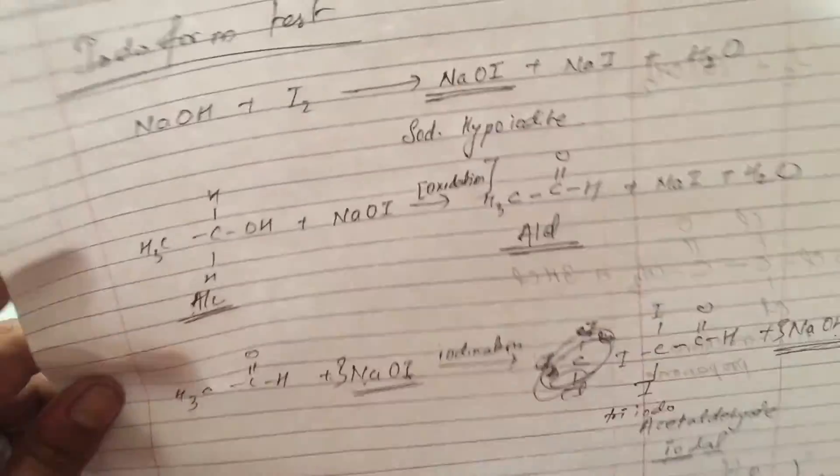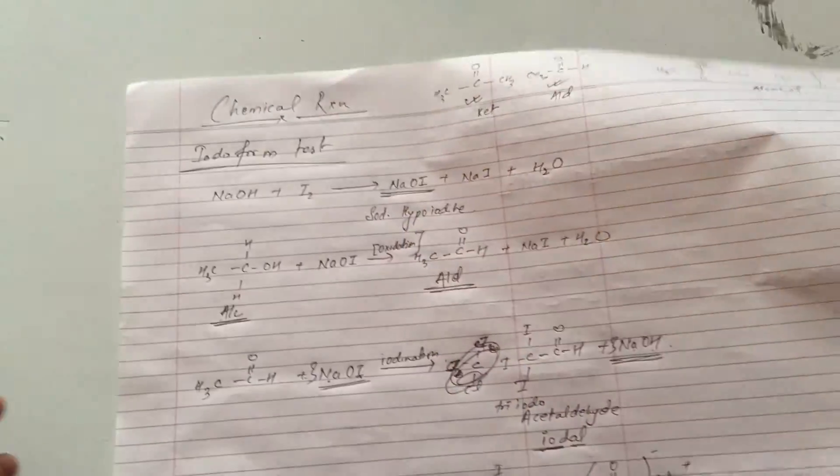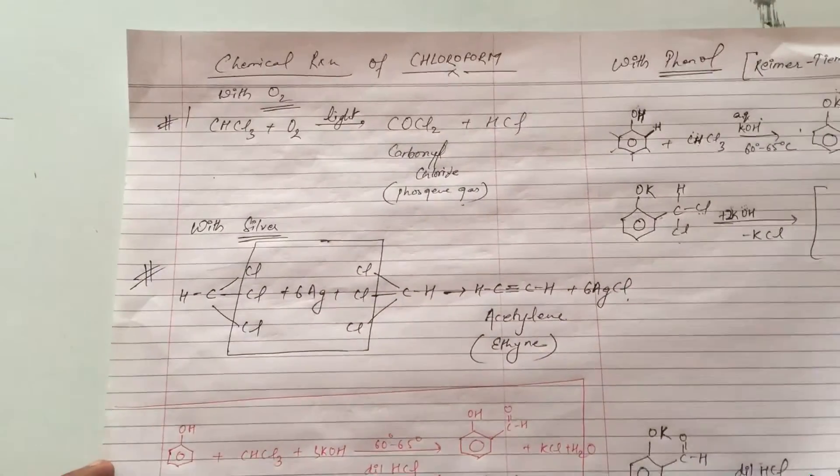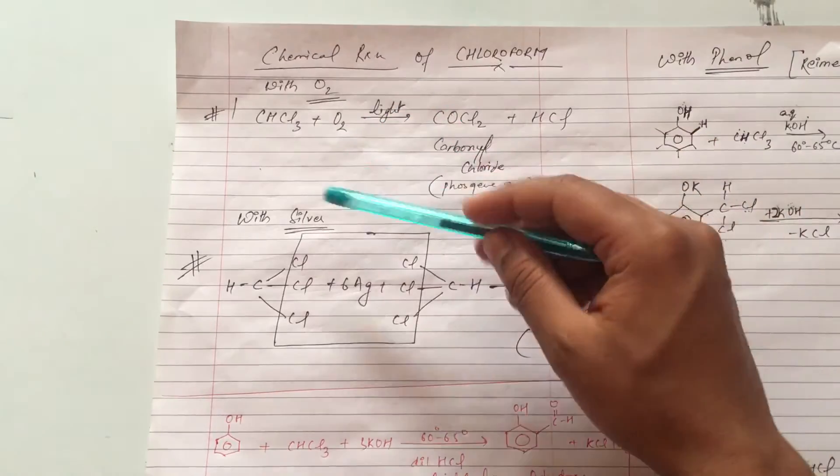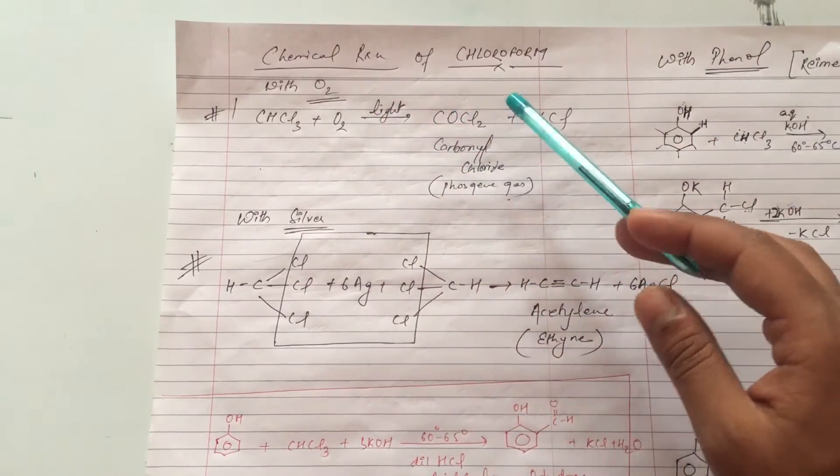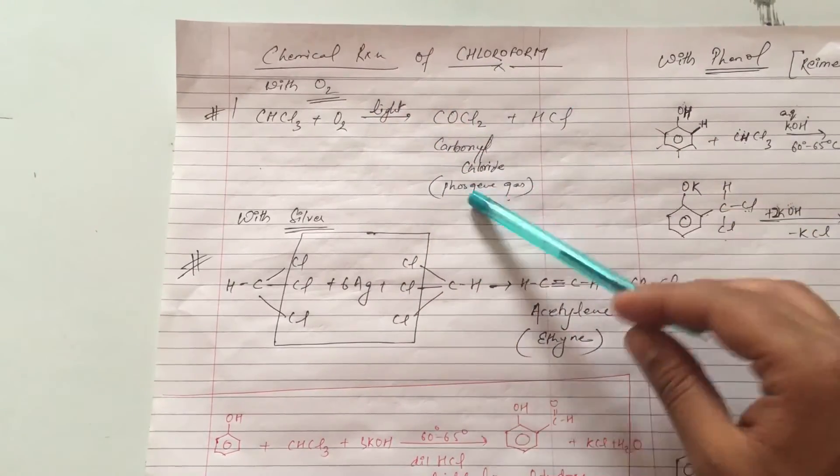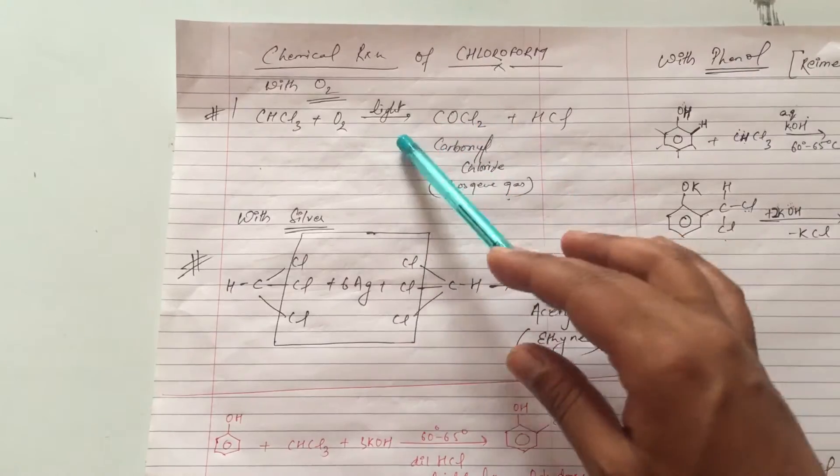So this is an important reaction. These are important reactions of chloroform chemical reactions. In this way, chloroform undergoes oxidation reaction. Generally, carbonyl chloride or phosgene gas COCl2 forms. It's in the presence of light. Phosgene gas is a poisonous gas.